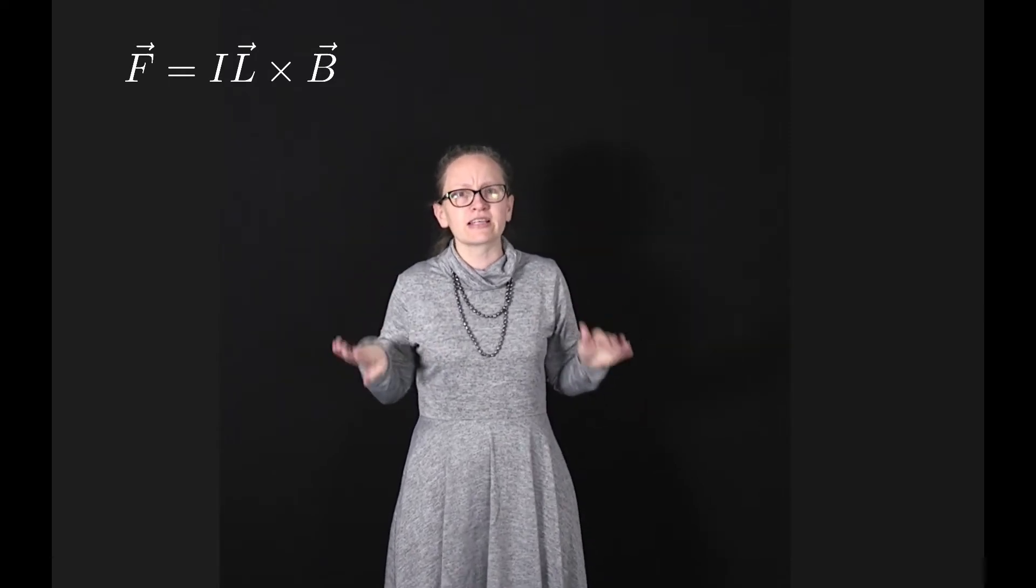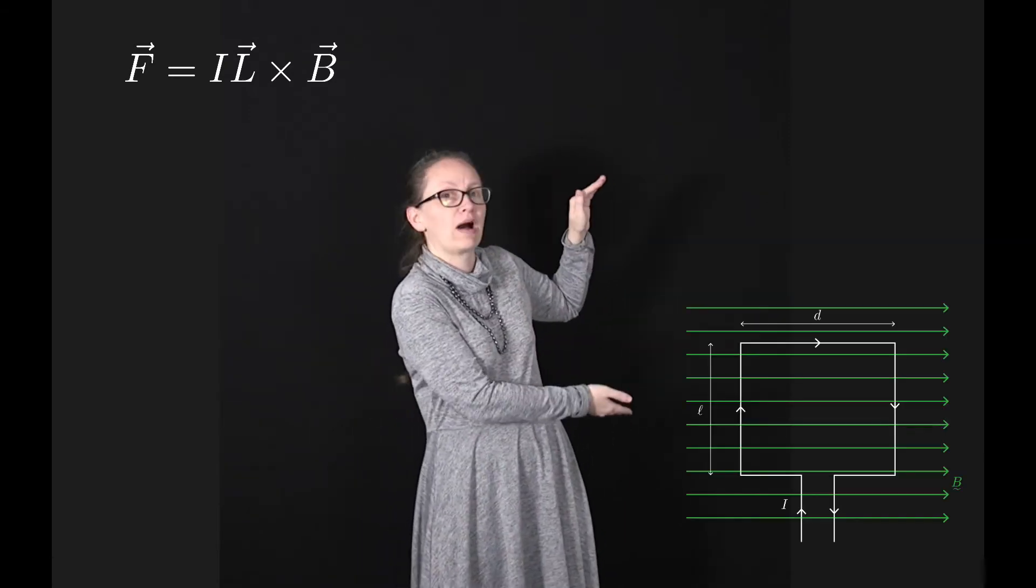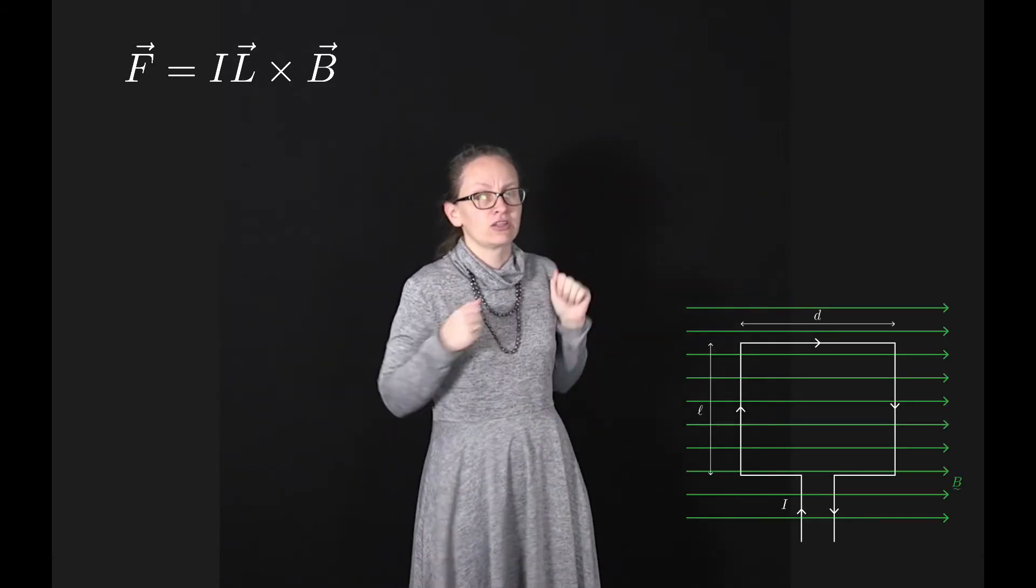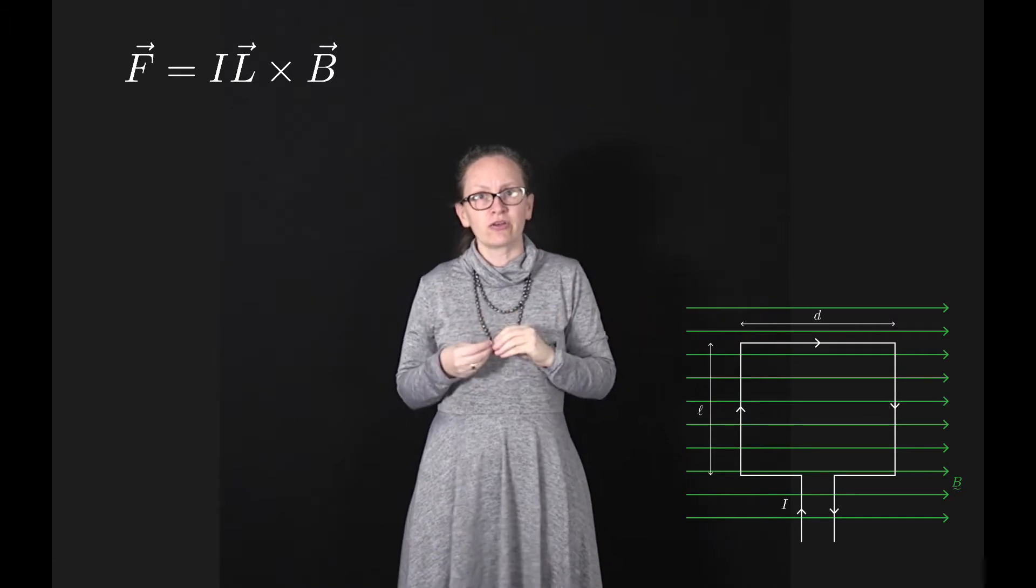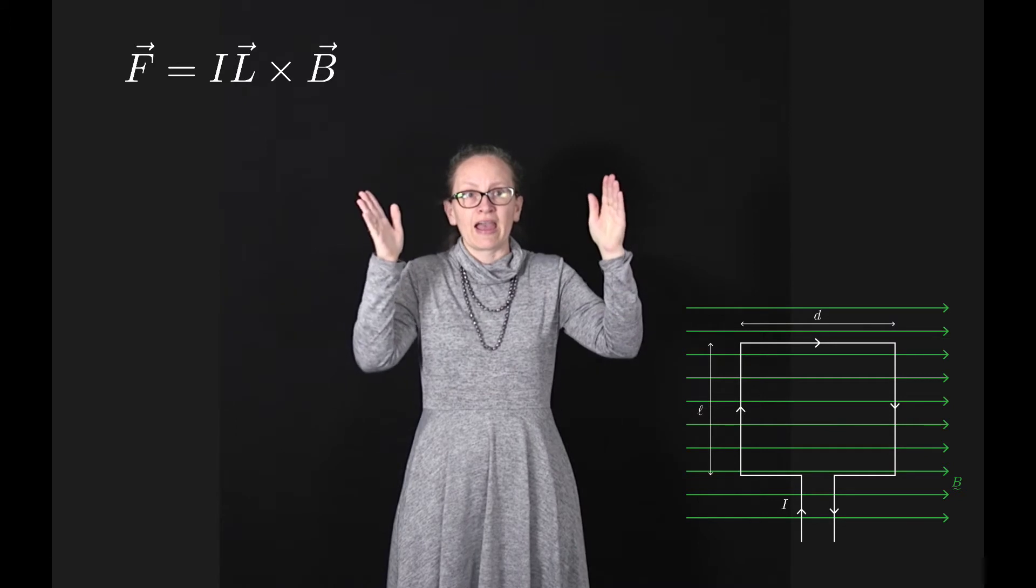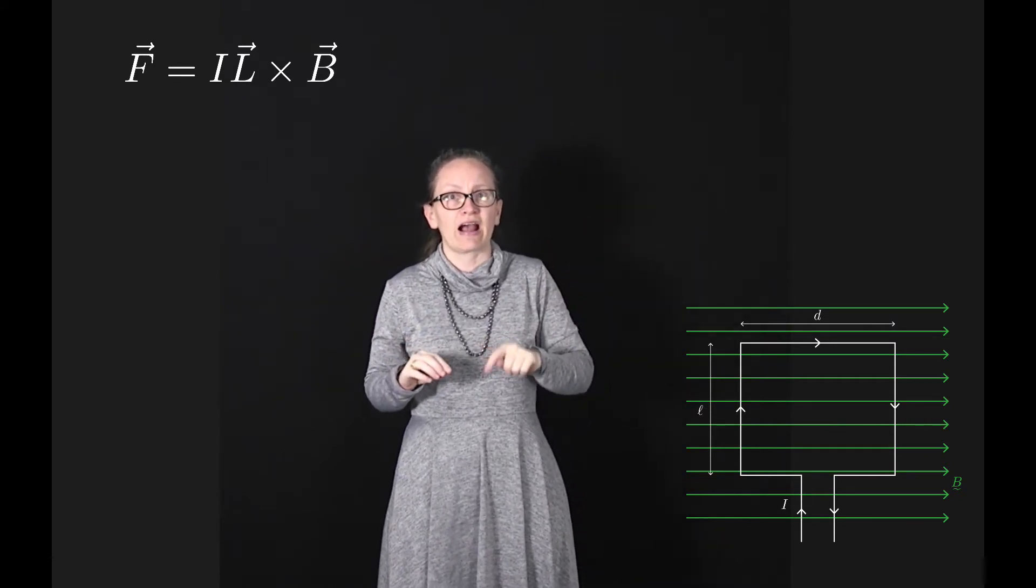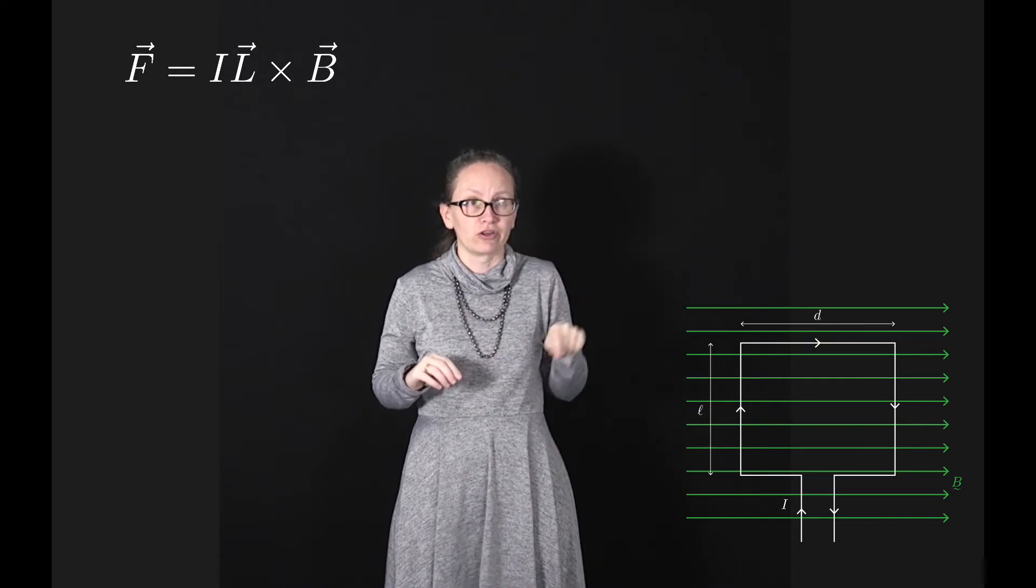Let's now consider what happens if we put a rectangular loop of wire into a magnetic field. Let our loop have a length L, a width D, and let it consist of N turns of wire with a current I flowing around the loop.